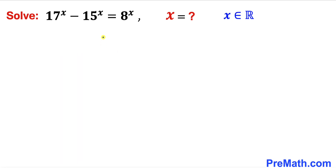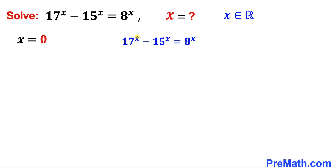Let's go ahead and get started with the solution. As our very first step, let's check our solution for different values of x. Let's check x equal to 0. We'll plug in this 0 value wherever we see x, so that gives us 17 to the power 0 minus 15 to the power 0 equals 8 to the power 0.